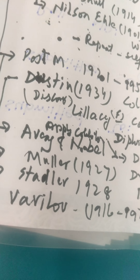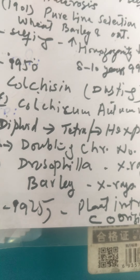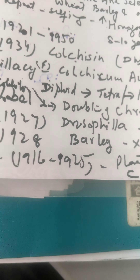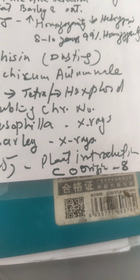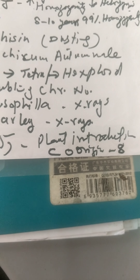Next is Muller, M-U-L-E-R, in 1927, who worked on Drosophila using X-rays. The same work was done by Stadler, S-T-A-D-L-E-R, in 1928 on barley, also with reference to X-rays. Next is Vavilov, a well-known Russian scientist who worked from 1916 to 1925 for about ten years on plant introduction and the center of origin of species. He found eight centers of origin throughout the world.